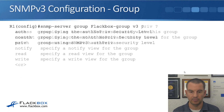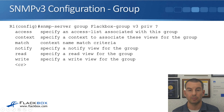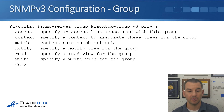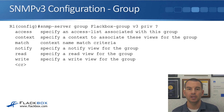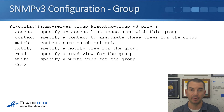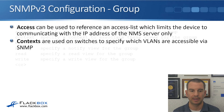After setting priv for the most secure level, the question mark shows additional keywords: access, context, match, notify, read, and write. With 'access' you can set an access list to lock down which IP addresses the device communicates with via SNMP. 'Context' and 'match' both apply to contexts, which are used on switches to specify which VLANs are accessible via SNMP. 'Notify', 'read', and 'write' are about views.